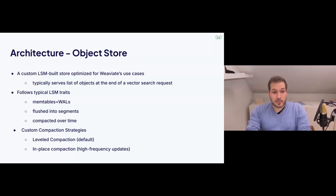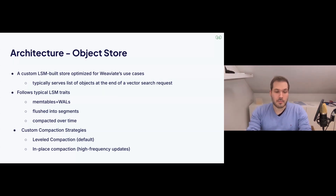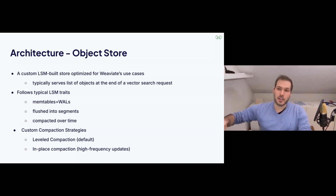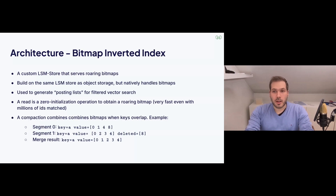One problem with leveled compaction is that if you have a lot of deletes, data is only freed once compaction actually occurs, which given the leveling can take a long time until the root segment gets compacted. So we added an in-place compaction strategy, where you go through a segment and remove entries that will be overwritten or deleted, compacting the segment in place rather than combining it with something else. That's one of the optimizations we made based on specific Weaviate use cases.